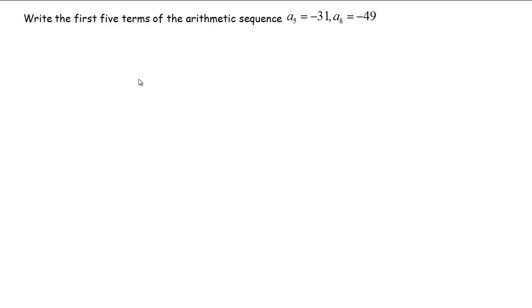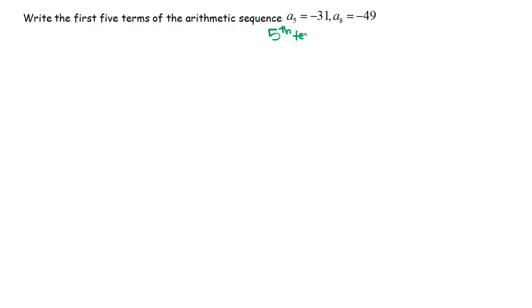Let's talk language. A sub 5 really just means nth term — more specifically, the 5th term. So if you were looking at the sequence, negative 31 is hanging out in the 5th term position, and negative 49 is in the 8th term — that's positions 6, 7, 8.